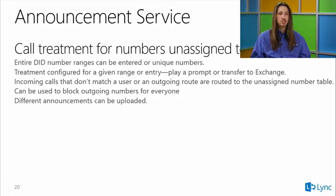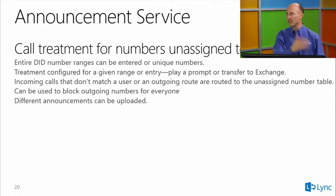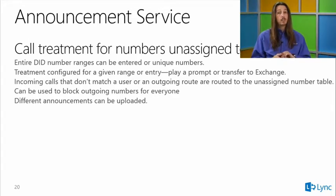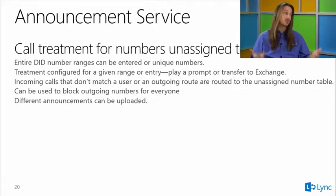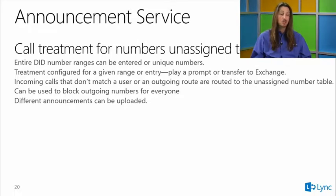The announcement service is powerful beyond just unassigned numbers — it can play messages, call a number after a timeout, send to voicemail, and covers everything from a DID range to a single specific number. Companies with disparate DID ranges should enter exactly the numbers they own; adding numbers you don't own will intercept calls that should reach real destinations.